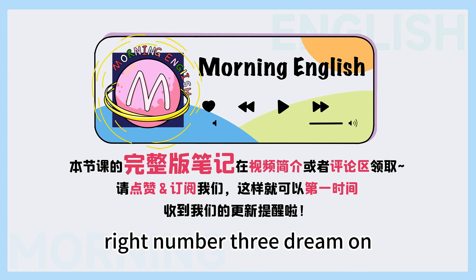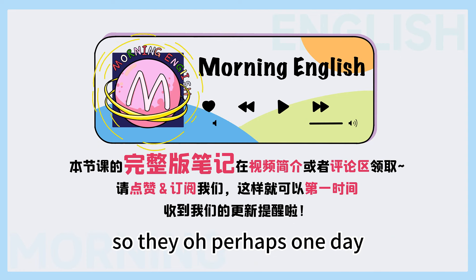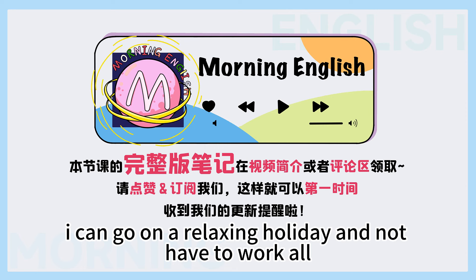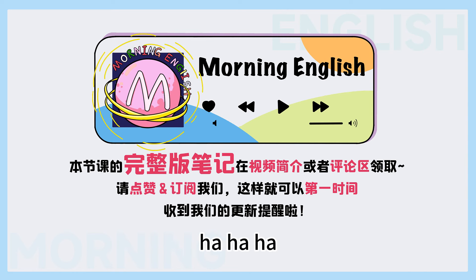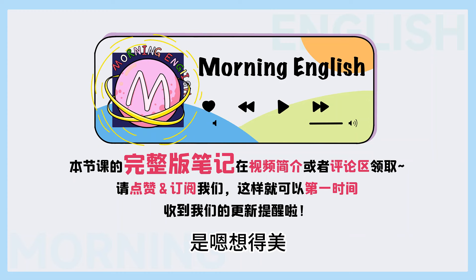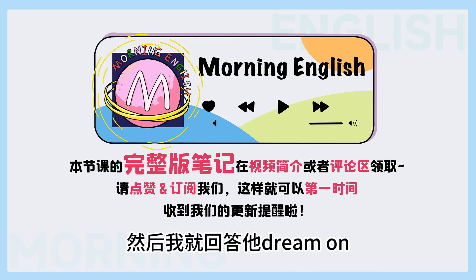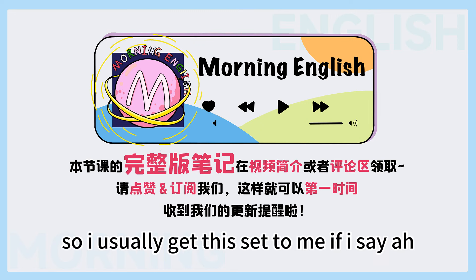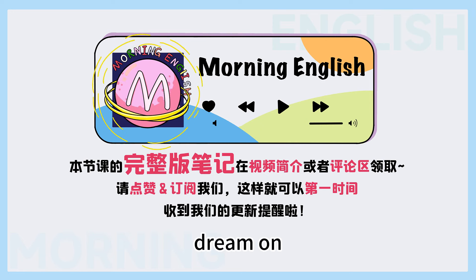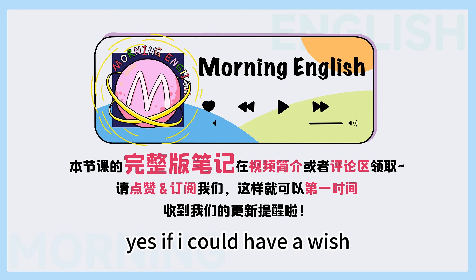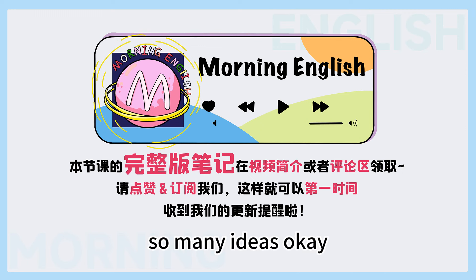Number three: dream on. So this is when somebody tells you a statement — perhaps one day I can go on a relaxing holiday and not have to work all the time — and you would say, yeah, dream on, meaning you're dreaming. Dream on的意思呢，是想得美。 比如说，Jack刚刚说，啊，我真的非常想拥有一个完美的放松的假期。 然后我就回答他，dream on，想得美呢。 So I usually get this said to me if I say: oh, if I win the lottery, I will buy a big house and a fast car. And then somebody will say, yeah, dream on, it's not happening. I love talking about what I would do if I win the lottery — so many ideas.